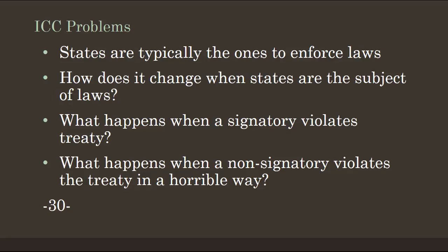What happens when a signatory violates a treaty? When someone signs on to be part of the ICC, they agree not to break any of these rules — so what happens when they do? Or what happens when a non-signatory violates the treaty in a horrible way? For example, if Canada as a hypothetical were brought up on war crimes but wasn't a signatory, who can compel them to comply? That is a core issue with these kinds of organizations.